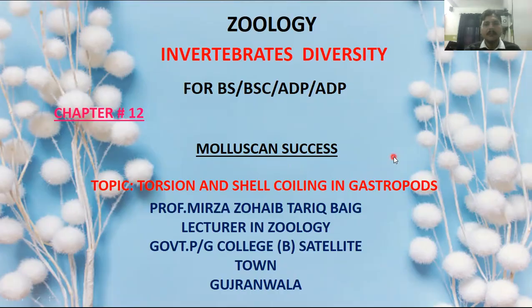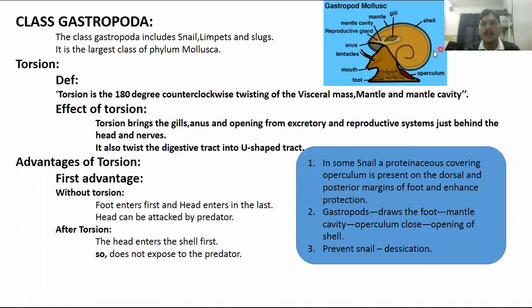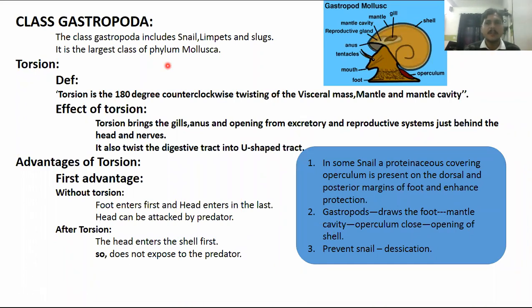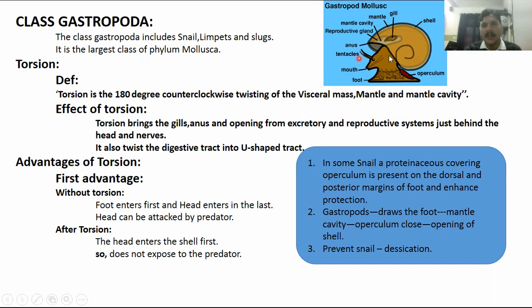This class is Gastropoda. 'Gastro' means stomach and 'poda' means feet, so the stomach and foot are prominent structures. Class Gastropoda includes snails, limpets, and slugs. It is the largest class of phylum Mollusca, with more than 35,000 species. In the gastropod body, you can see the foot, a coiled shell, gills, mantle cavity, reproductive organs, and the anus.